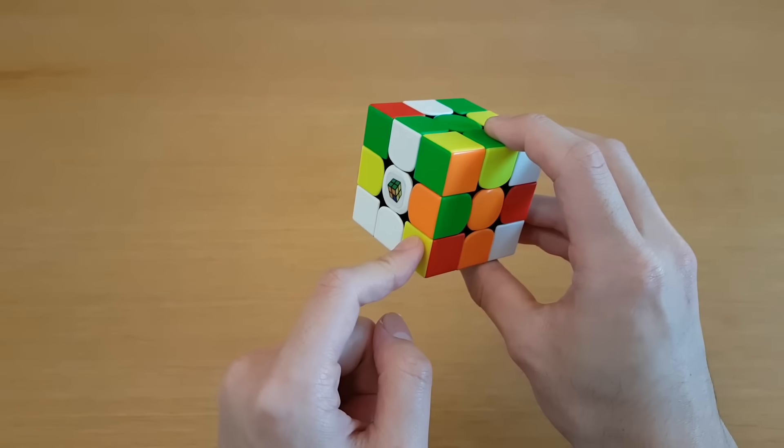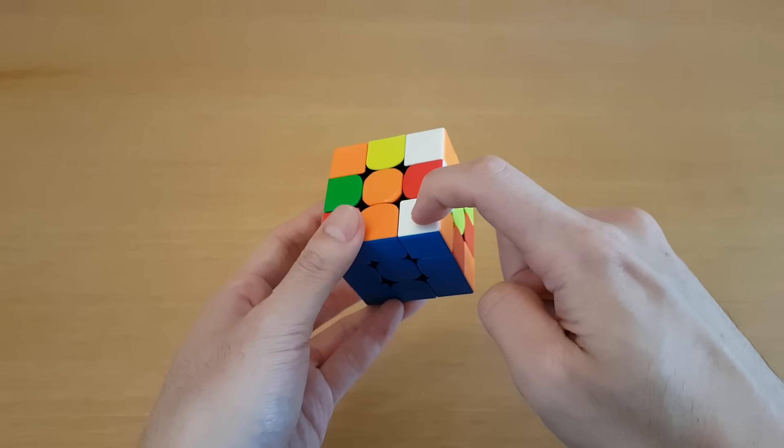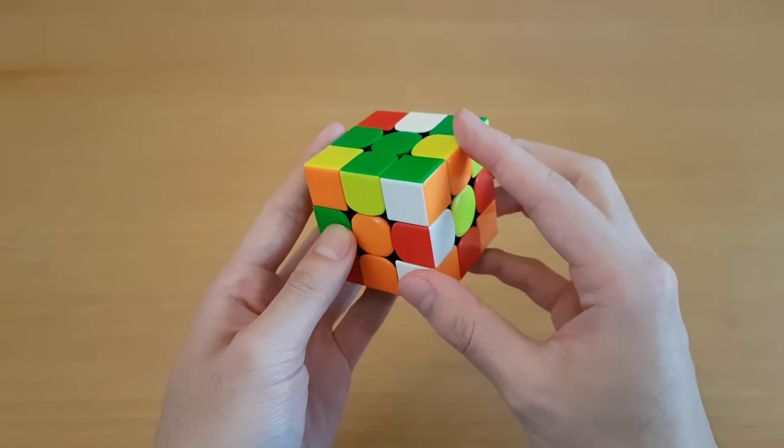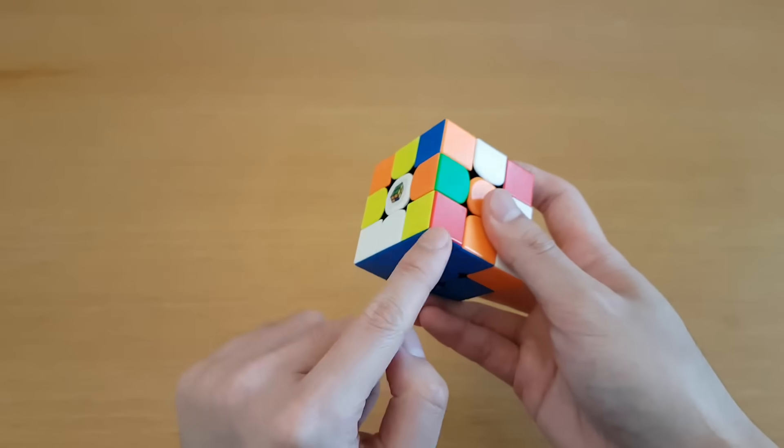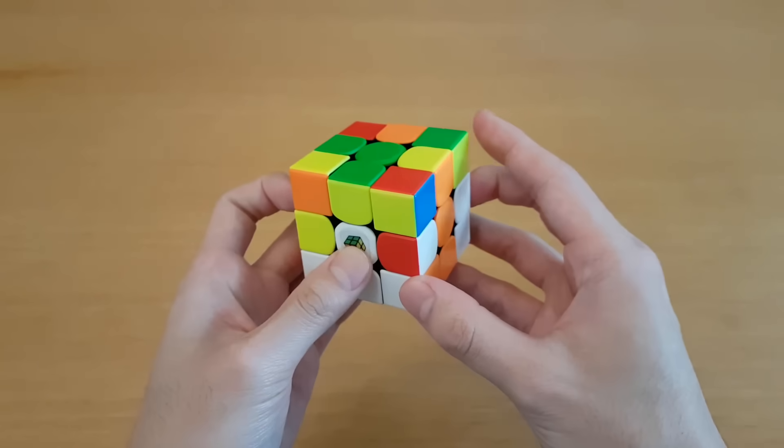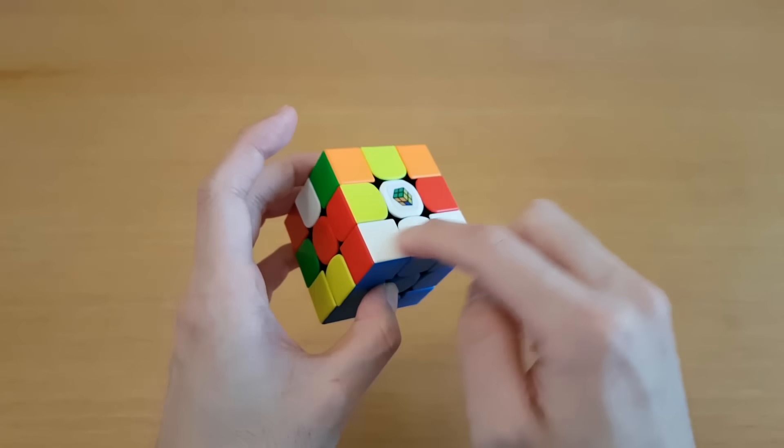So I want to start by solving this piece, and this is where a beginner might think any of the white could go there, but obviously it's just going to be this one, the one that also has blue on it. I'm just going to consider this sort of intuitive, just moving this out and then moving it in here. I don't know, maybe like that, and then moving this one in here to keep blue solved, and then now I have this part solved.